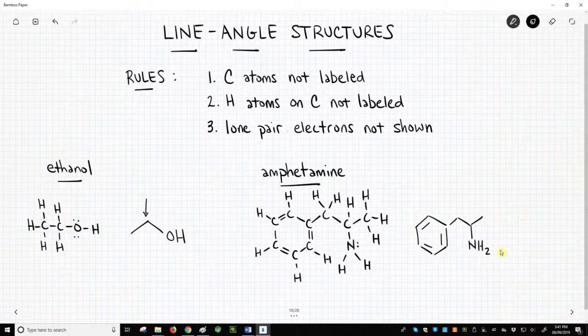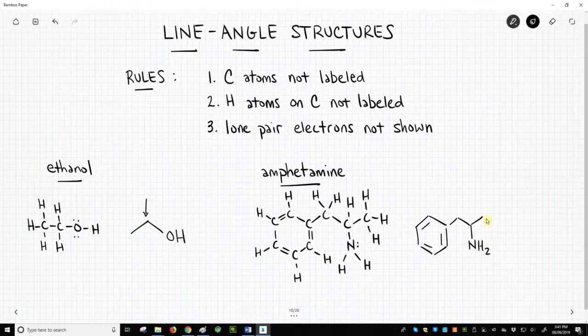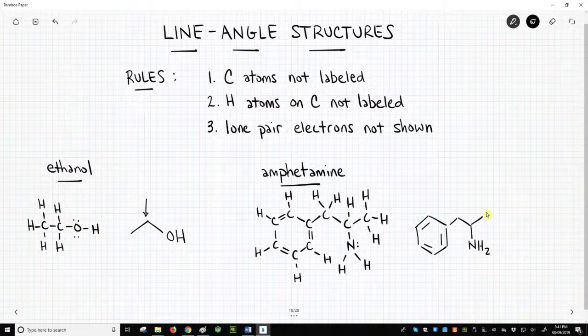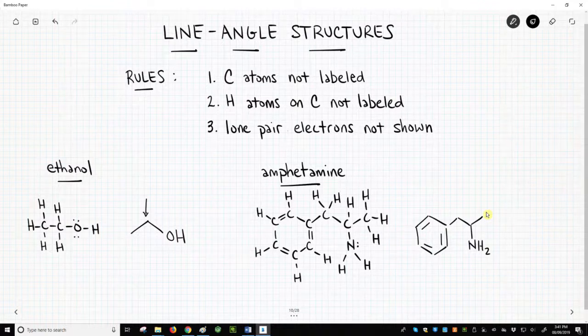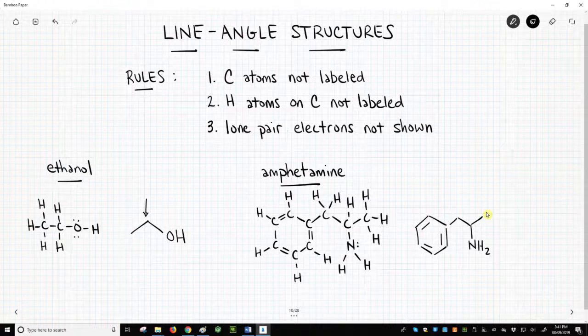It is much faster to draw a line-angle structure than a Lewis dot structure. How does the octet rule fit with line-angle structures? Well, this end carbon is shown as having only one bond. We know that carbon should have four bonds. Where is this carbon getting its other three bonds? They are bonds to hydrogens. So because of the octet rule, we can infer how many hydrogens are on the carbons without explicitly drawing them in line-angle structures. The same goes for lone pairs.